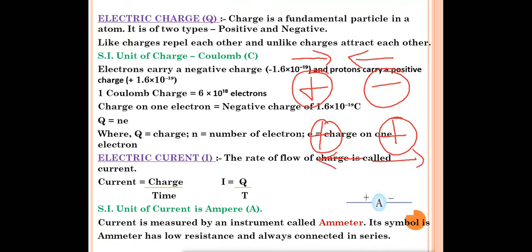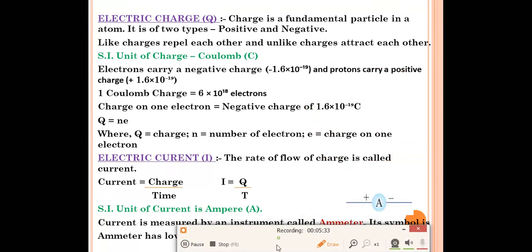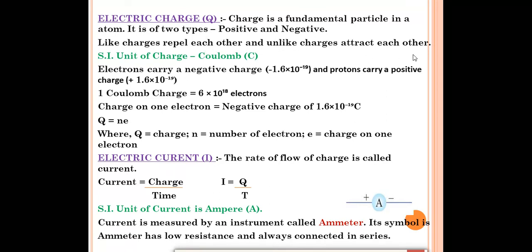Like charges repel each other and unlike charges attract each other. The SI unit of charge is Coulomb (C-O-U-L-O-M-B), symbol capital C. Electrons carry a negative charge and protons carry a positive charge, but their magnitudes are equal. Electrons carry a charge of −1.6 × 10⁻¹⁹ coulomb and protons carry +1.6 × 10⁻¹⁹ coulomb.